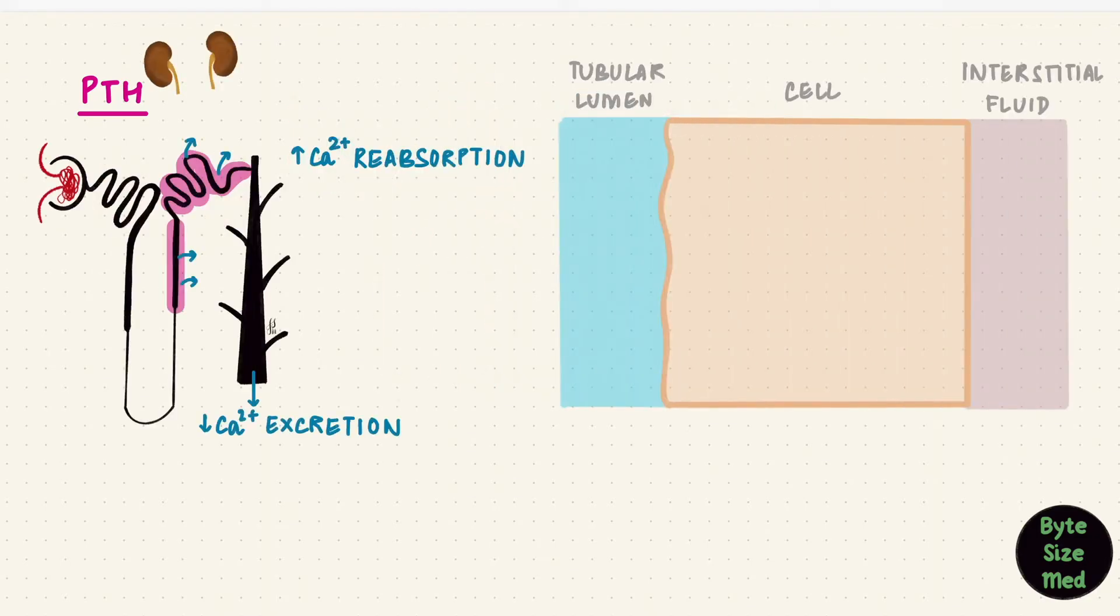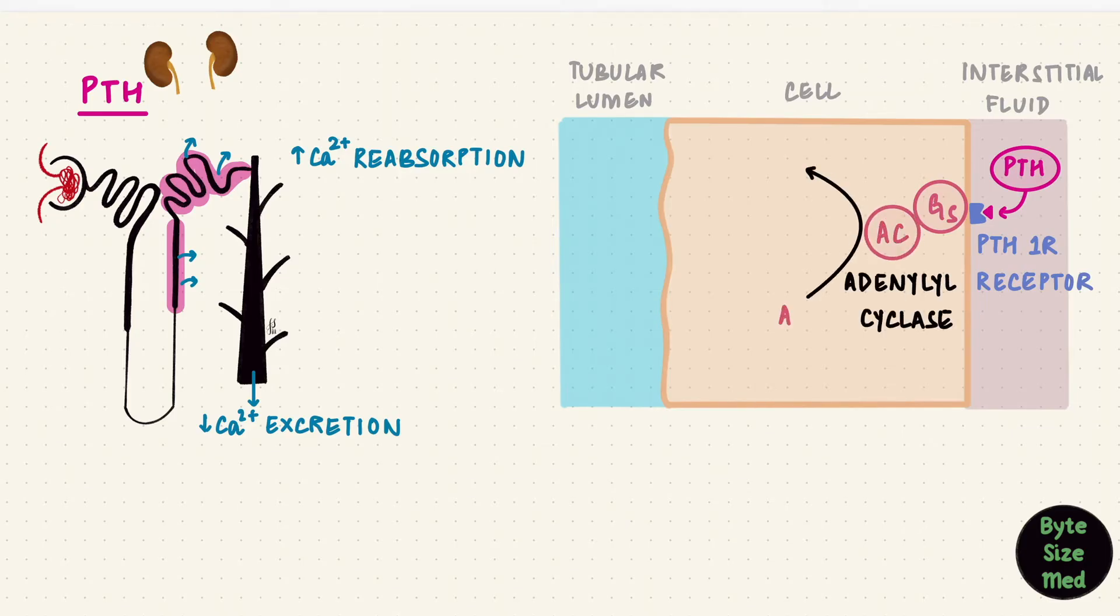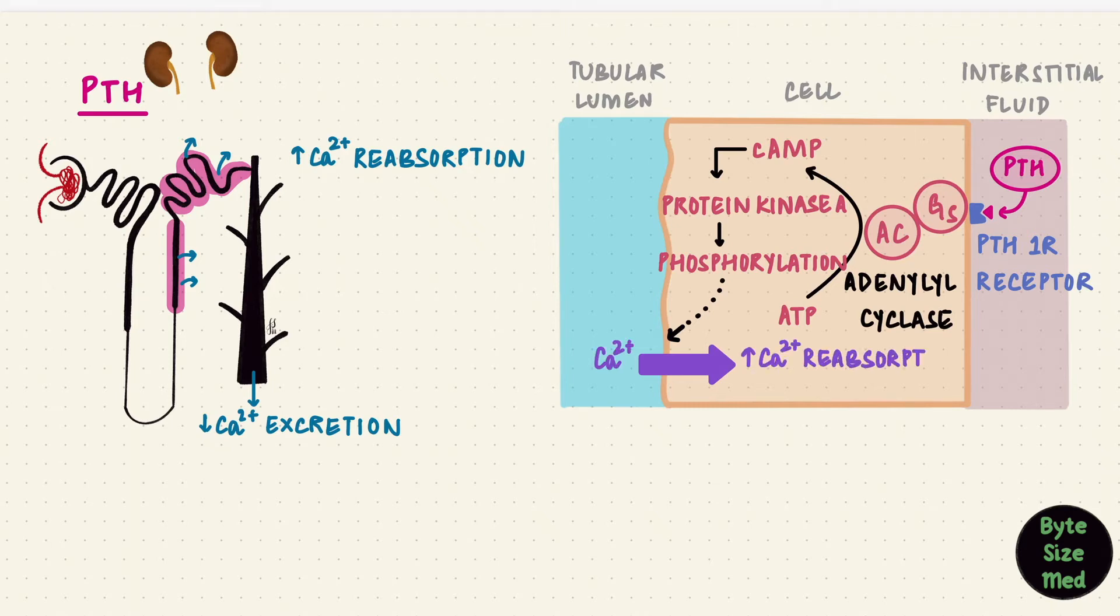It does this by acting on its receptor. Usually that's the PTH1 receptor, which is coupled to a G protein. This is a different G protein, Gs, which activates adenylyl cyclase, converting ATP to cyclic AMP, and that cyclic AMP activates protein kinase A, phosphorylating proteins and increasing calcium reabsorption. Basically via cyclic AMP. That's what you need to remember.